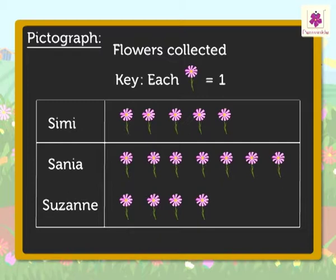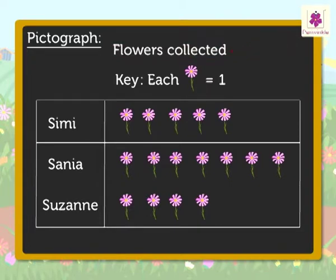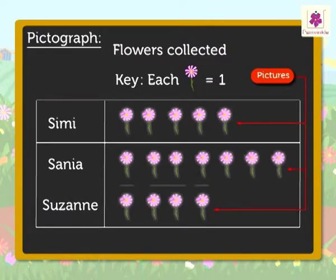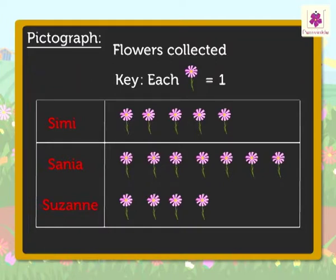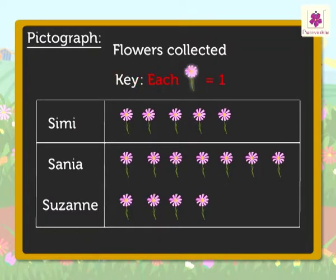Every PICTOGRAPH has: 1. A TITLE which tells us what the PICTOGRAPH is about. 2. PICTURES which tell us the given number of objects. 3. LABELS which tell us what kind of data is shown. 4. The KEY which tells us the number each picture is equal to.